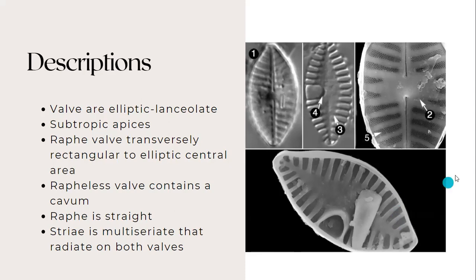And its raphe valves are transversely rectangular to elliptic central area. It has a rapheless valve that contains a cavum and it is very straight. And its striae is multiseriate that radiates on both valves.